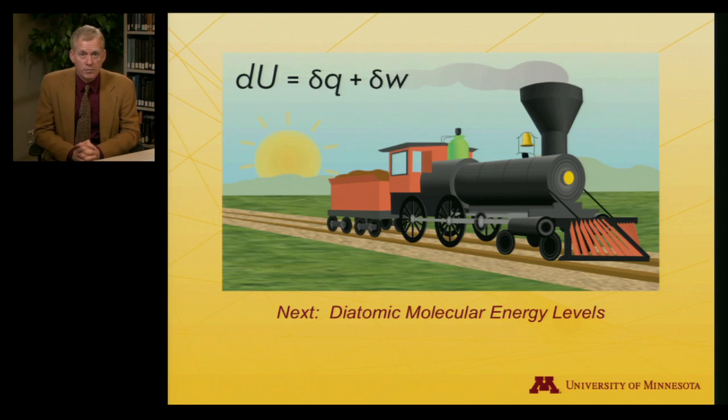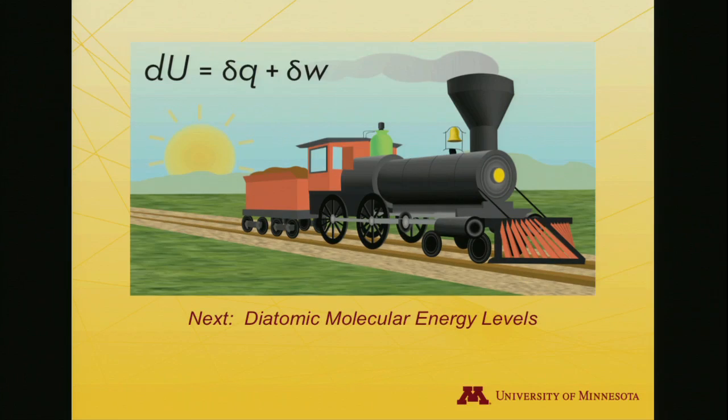All right. We've completed our examination of the available energy levels for an atomic system. Next, we're going to move on to consider molecules, and we'll consider the simplest molecule beyond an atom. You really shouldn't call an atom a molecule, but two atoms can be a molecule. So we will look at diatomics and the allowed energy levels in diatomic molecules. Before we move on to that lecture, though, let's take a look at one more demonstration.